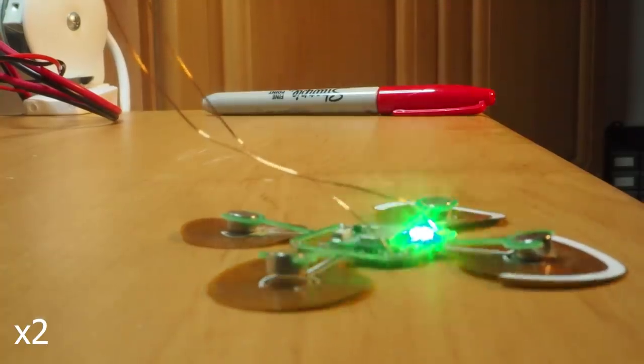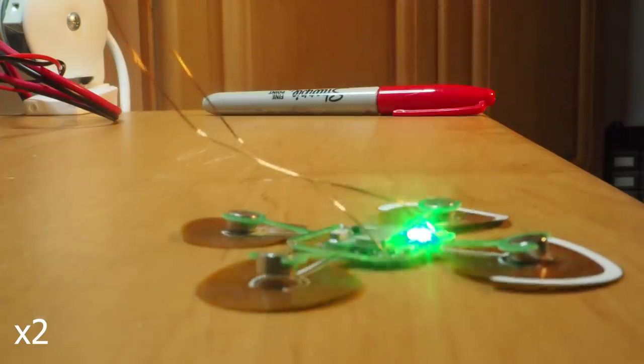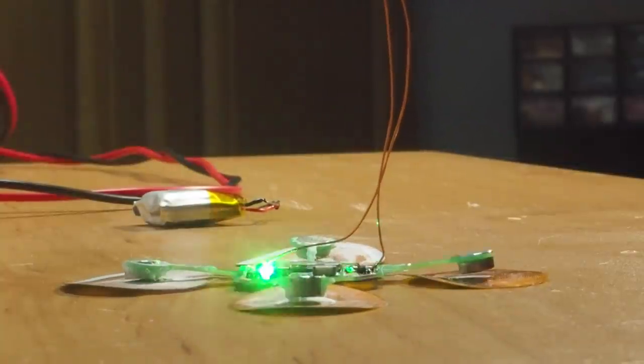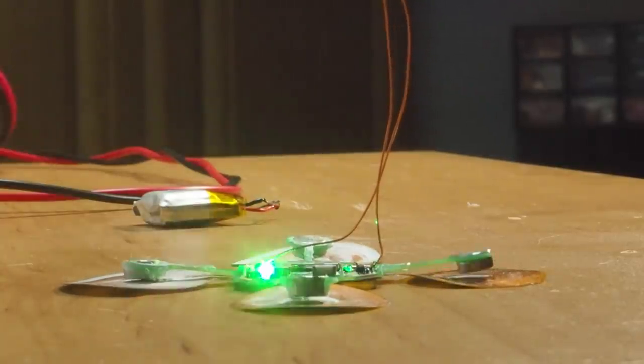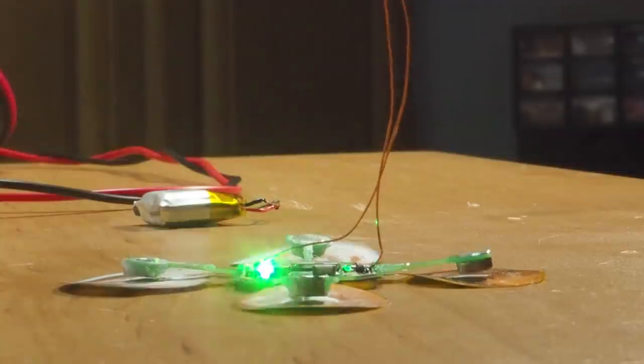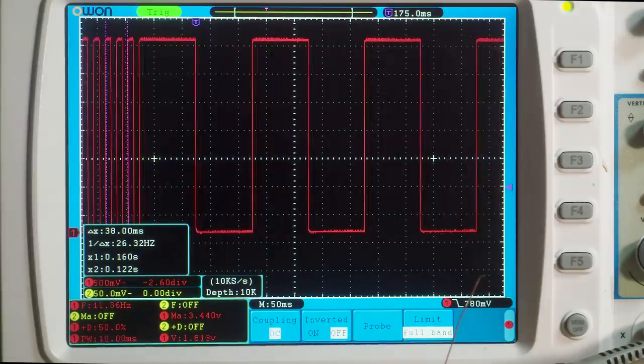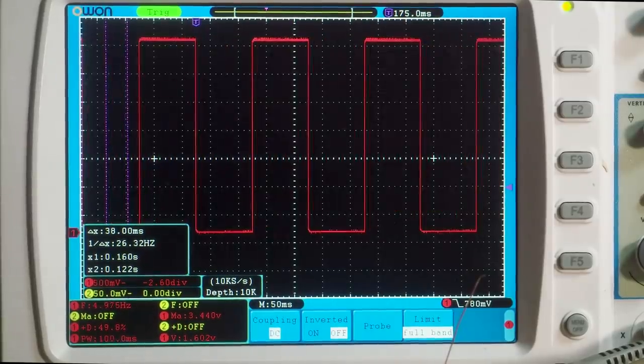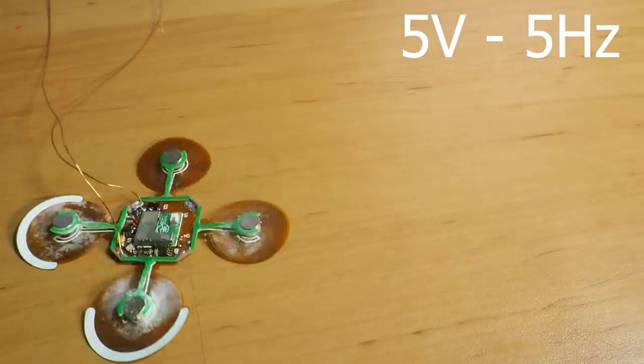Now this didn't solve the problem 100%. The robot was sometimes moving and sometimes not, depending on how flat the flexible coils were. So at this point I decided to try and drive the legs a little faster. I modified the software to change the PWM's frequency every 20 seconds, and the results were quite interesting.